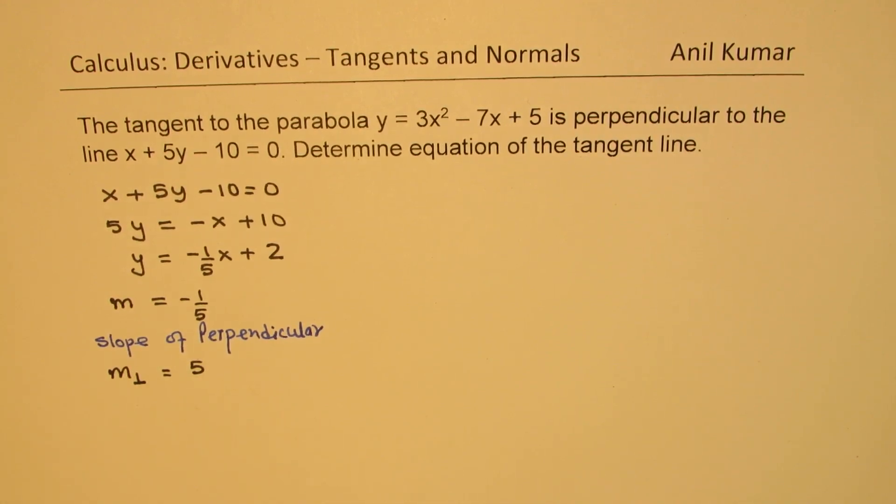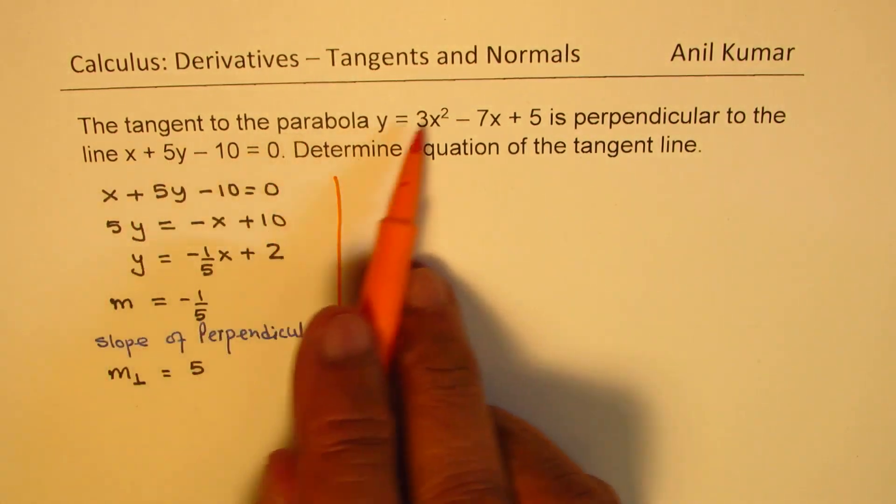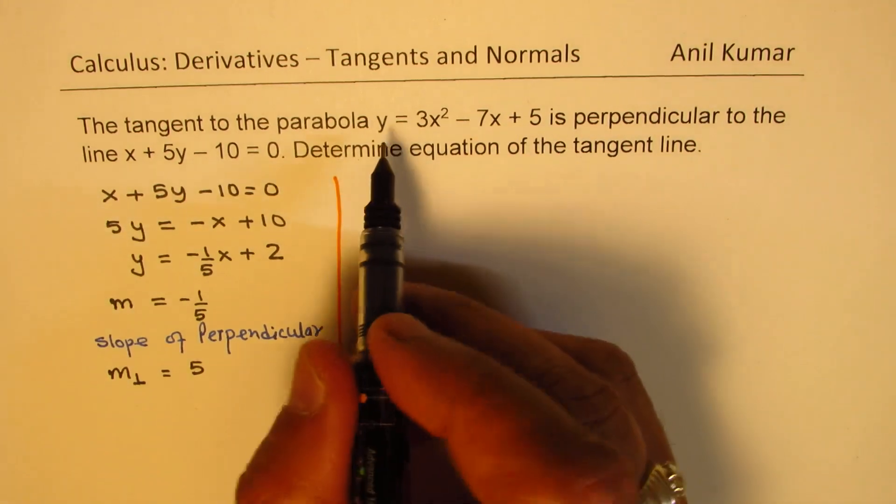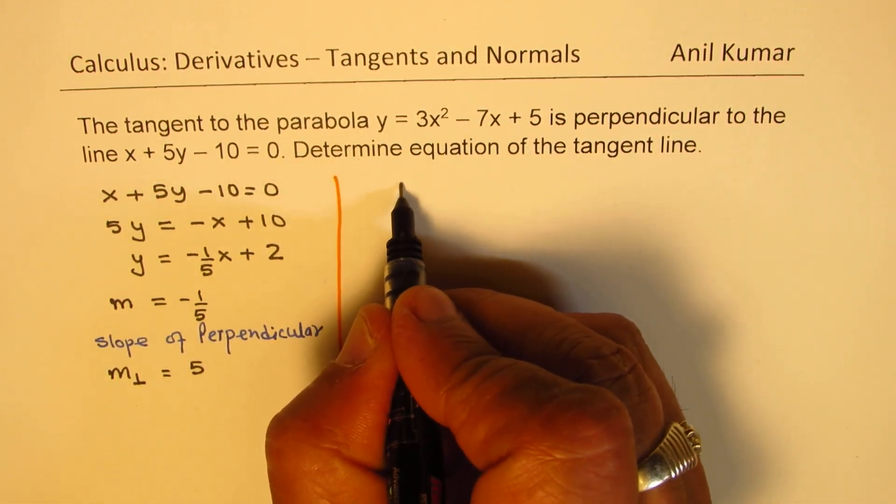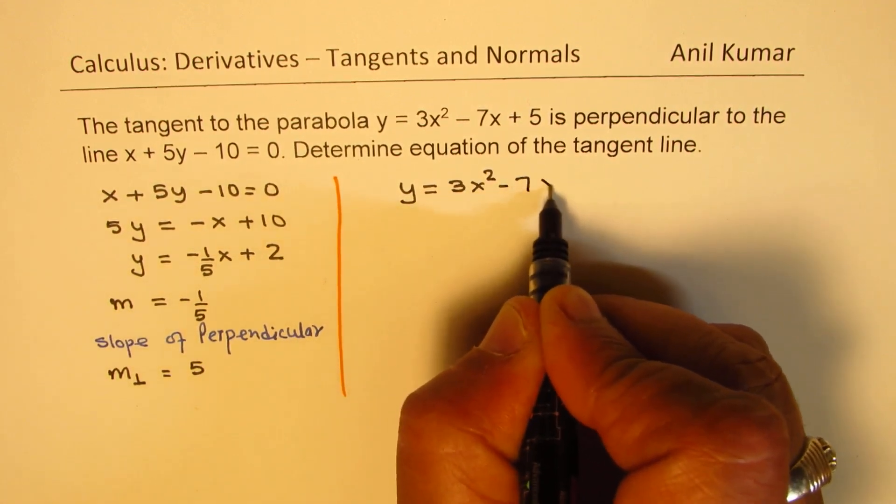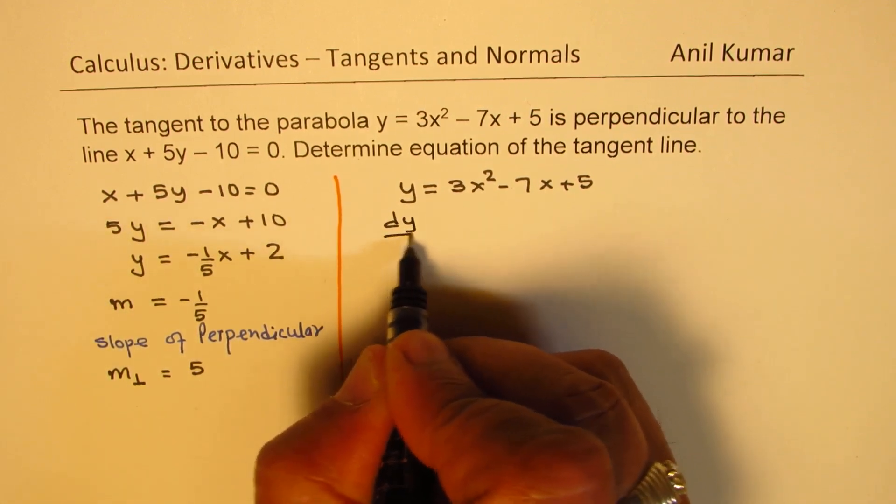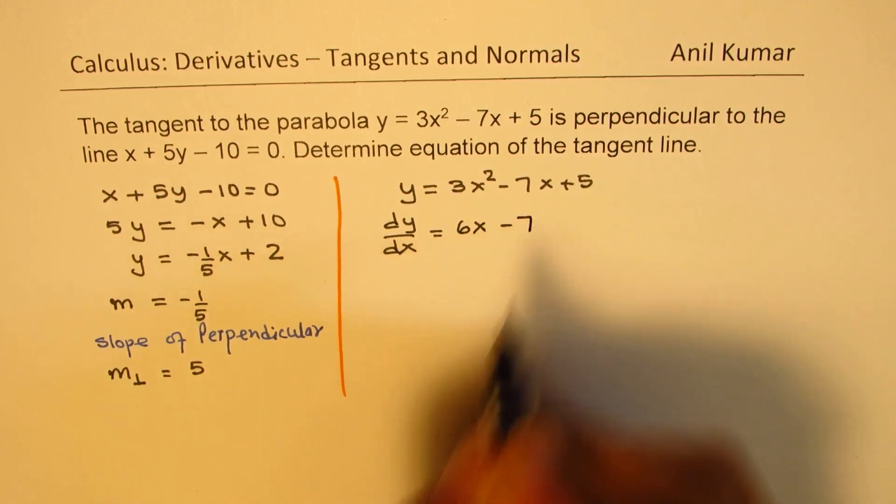Now, this is the slope of the tangent to this parabola. So, now, we will find the derivative and figure out the slope of the tangent line. So, we have y equals 3x squared minus 7x plus 5. Differentiate with respect to x. So, we get dy dx as equal to 6x minus 7.